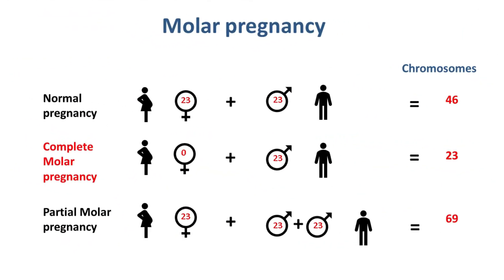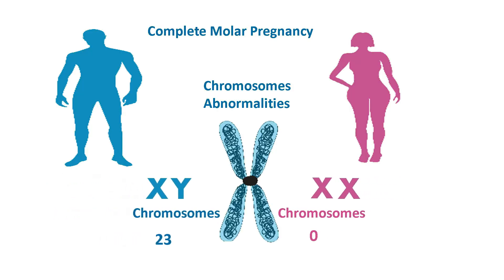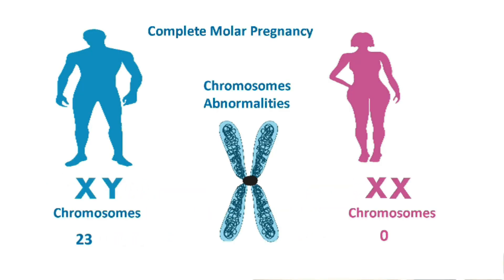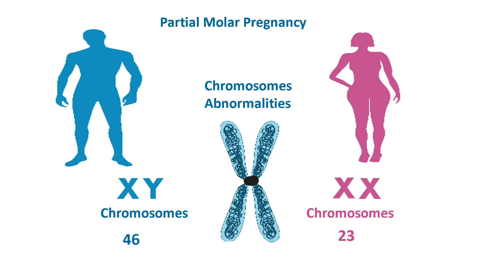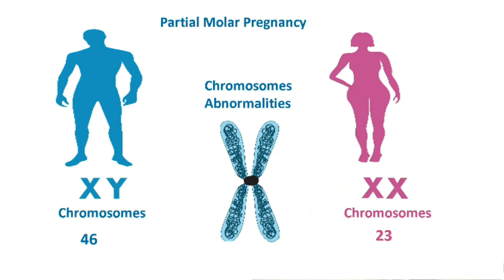Molar pregnancy was discussed as one of the reasons for abnormal vaginal bleeding in a previous video. The cause of molar pregnancy is the lack of the right number of chromosomes. In a complete molar pregnancy, the maternal set of chromosomes is missing, whilst in a partial molar pregnancy, the paternal set of chromosomes is duplicated in the fetus, therefore affecting the development and survival of the fetus.